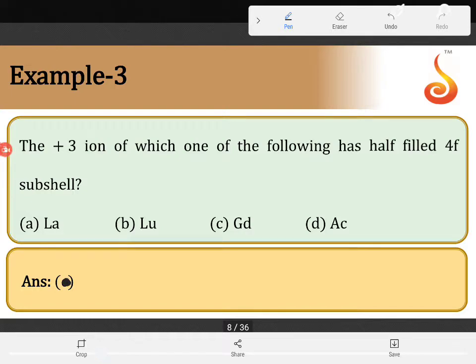Option A is lanthanum, option B is lutetium, option C is gadolinium and option D is actinium.